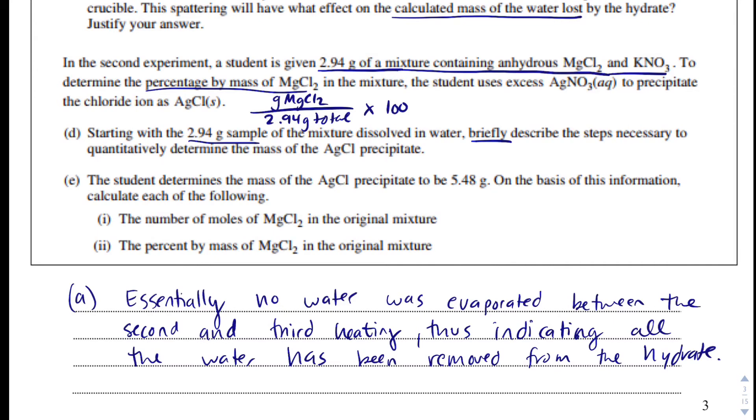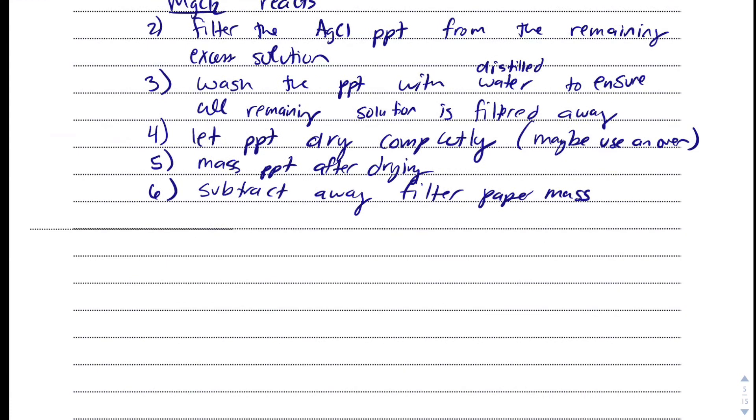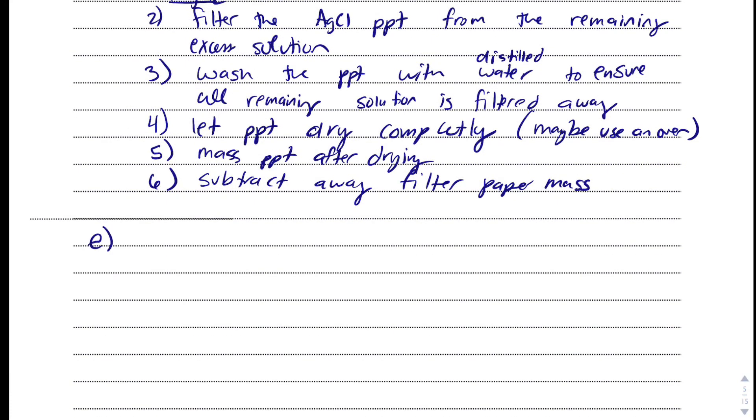In part E now, they say the student determines the mass of the silver chloride precipitate to be 5.48 grams. On the basis of this, we will need to calculate the following, the number of moles of magnesium chloride. In E, the first thing I'm going to do is I'm going to write the reaction. And we have just a simple double replacement reaction of silver nitrate plus magnesium chloride. And the precipitate that we get, they tell us it's silver chloride. And so, we're going to get magnesium nitrate left over.